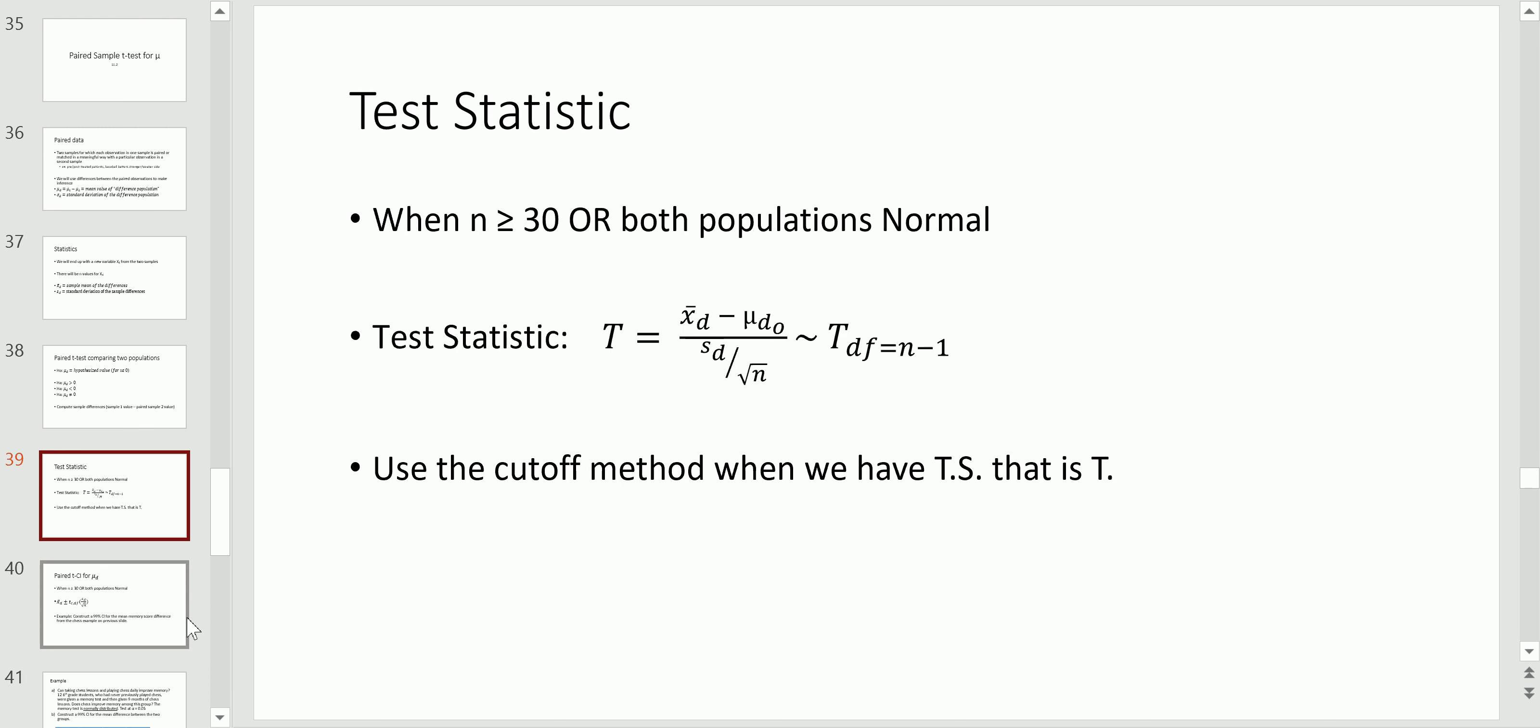Now let's take a look at the test statistic. Now, the condition we need to satisfy here before we can actually apply this particular method is that n is at least 30 or both the pre and post or both paired samples came from normal populations. So check this. This must be checked out before you can prudently use this test statistic.